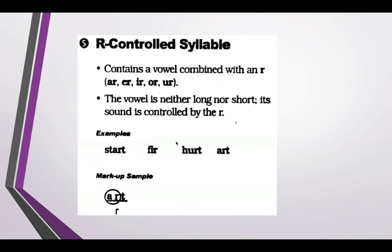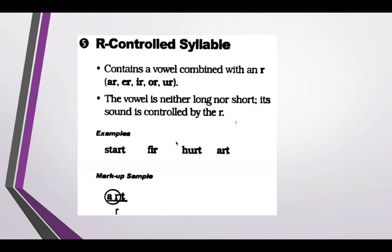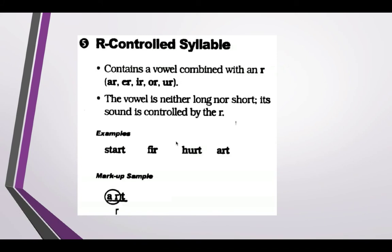R-controlled syllables: vowels, when next to an R, behave differently. It's not a long A, it's not a short A — when you've got the R, like in 'start,' you don't hear a clear long or short A. The R takes over. You probably know this as the bossy R. The R controls whatever the vowel sound is. So whenever you have a vowel next to R, it's an R-controlled syllable, like 'art.' You circle the vowel and the R when marking it up.